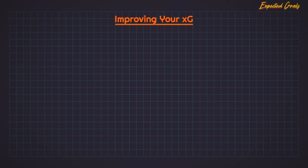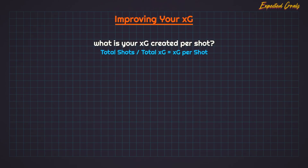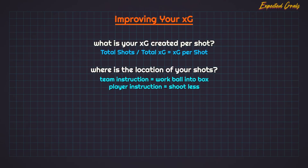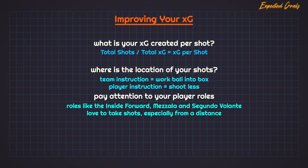If you're looking to improve your XG in a match, here are some things to keep in mind. First, in addition to your total XG, look at your XG created per shot — the equation is total XG divided by number of shots. Sometimes quality over quantity is better. Next, consider where the location of your shots is. The closer you are, the better chance you have of scoring. The team instruction 'work the ball into the box' and the player instruction 'shoot less' can both be effective at improving shot location. Third, pay attention to your player roles — roles like the inside forward, Mezzala, and Segundo Volante love to take shots, especially from distance. And finally, remember the ever-flowing thread through all of Football Manager: sometimes we just get unlucky.